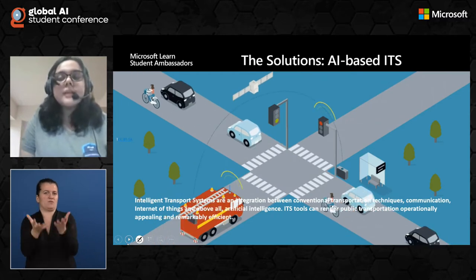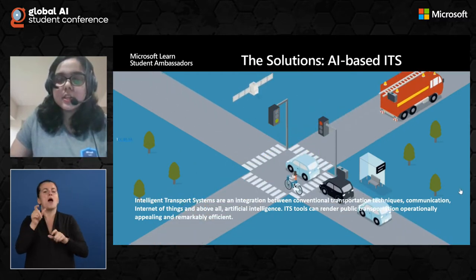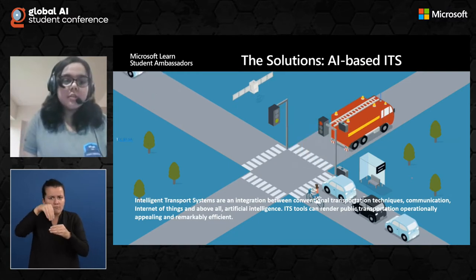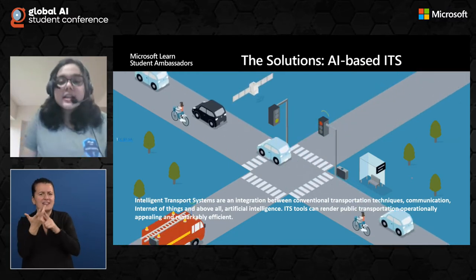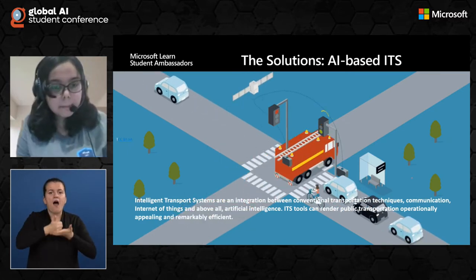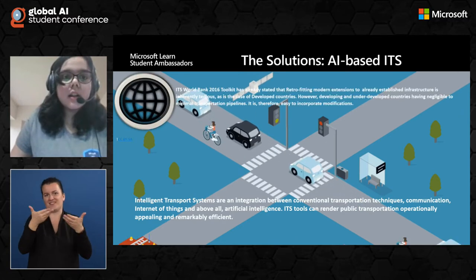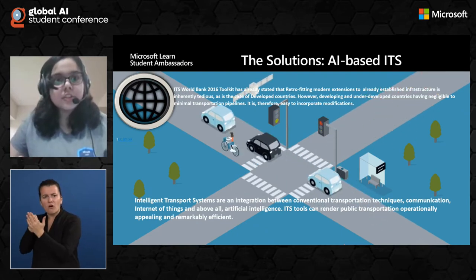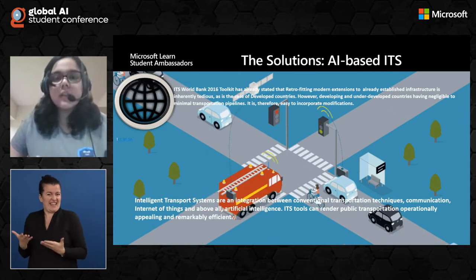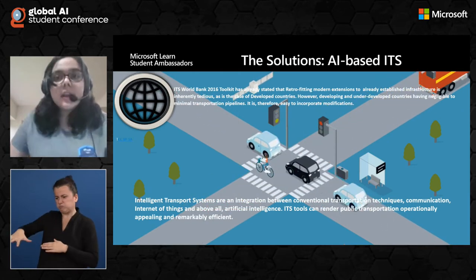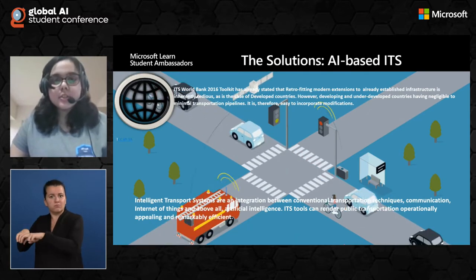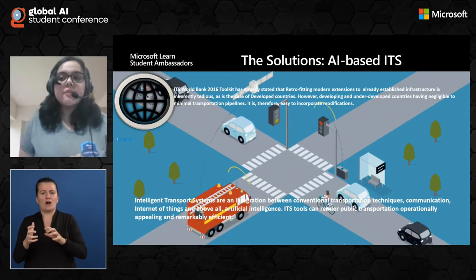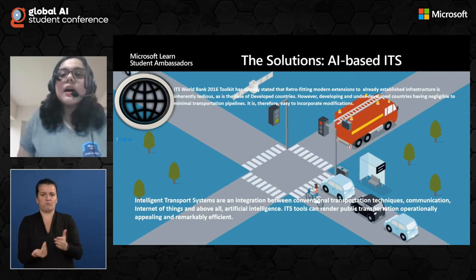The solution for this problem is artificial intelligence-based ITS, or Intelligent Transportation Systems. Intelligent transportation systems are an integration between conventional transportation techniques, communication engineering, Internet of Things, and above all artificial intelligence. ITS tools can render public transportation operationally appealing and remarkably efficient. The ITS World Bank 2016 toolkit states that retrofitting modern extensions to already established infrastructure is inherently tedious, as is the case in developed countries.